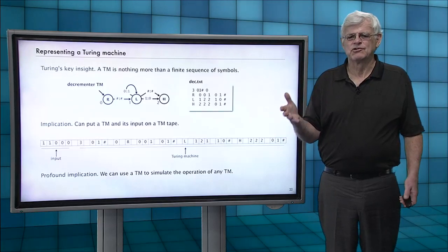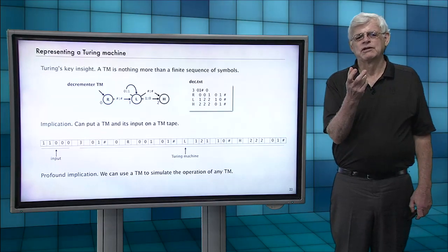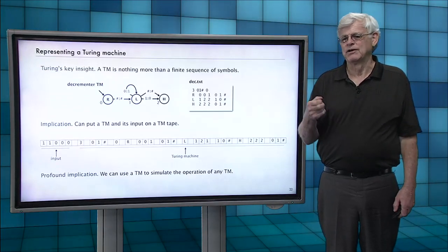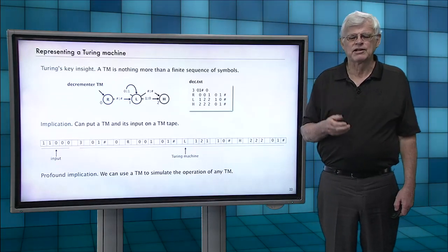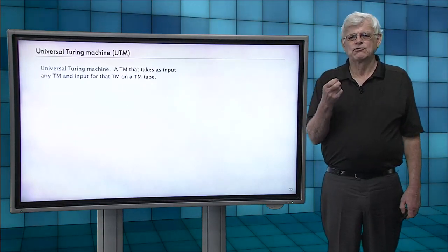Since any Turing machine can be described with finite set of symbols in this way, this Turing machine that uses this as input is going to be able to simulate the operation of any other Turing machine just like our Java program did. That's the idea of a universal Turing machine.